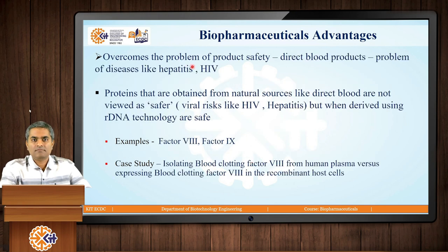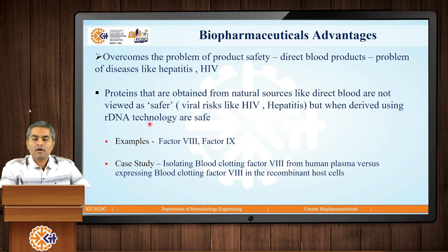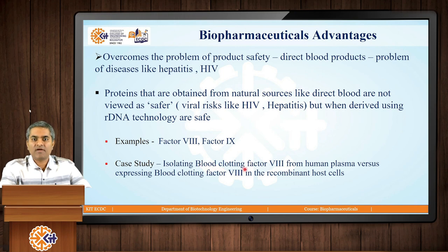The second important advantage concerns blood-isolated proteins such as Factor 8 and Factor 9, where there is always a risk of viral contaminations like HIV or hepatitis viruses. Biopharmaceuticals are therefore safer to be produced using recombinant DNA technology. For example, the blood clotting Factor 8 used for the hemophilia condition can be produced by either isolating it from human plasma or blood, versus expressing the same protein using its gene of interest in recombinant host cells. To avoid viral risks, it is always advantageous to produce these factors in recombinant host cells instead of isolating them from natural sources.